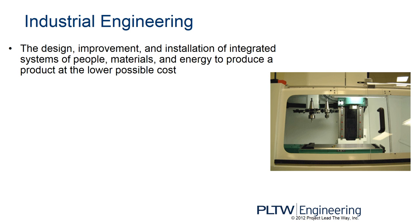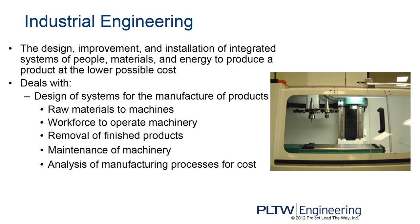Industrial engineers focus on designing systems for the manufacture of products. They take anything that happens in the plant and use people and processes to efficiently build whatever item they've been asked to build — whether that's raw material fed into injection molding machines to make a plastic part, or the workforce operating machinery. They might design a tool that allows workers to install six screws quickly and easily without over-tightening or missing one. They also deal with removing finished products, stacking pallets, packing them into trucks, and maintaining the machinery.